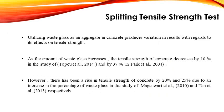Splitting tensile strength test: utilizing wasted glass as an aggregate in concrete produces variation in results regarding its effect on tensile strength. Results of several researches indicate that as the amount of wasted glass increases, the tensile strength of concrete decreases by 10% and by 37% due to its amorphous structure. Furthermore, several results have found a rise in tensile strength of concrete by 20% and by 25%, concluding that as the percentage of wasted glass increases, the tensile strength of the specimen increases.